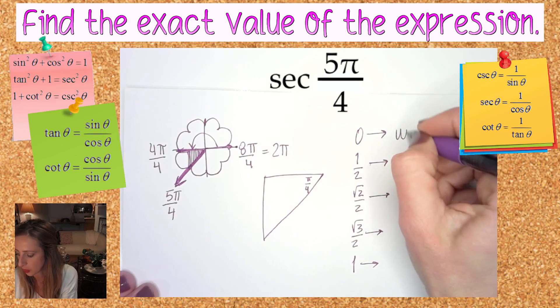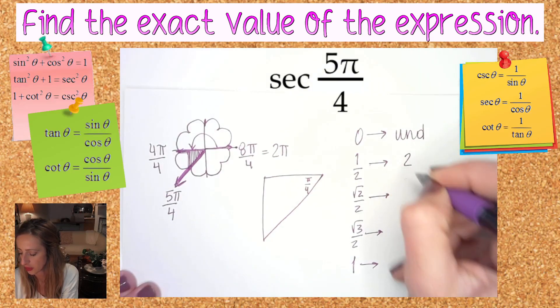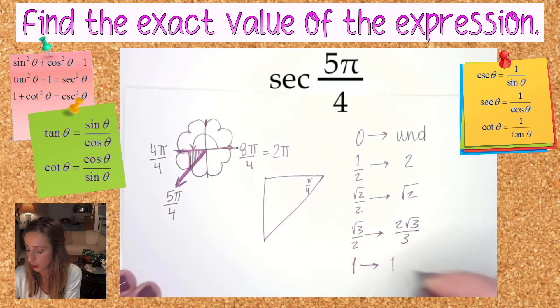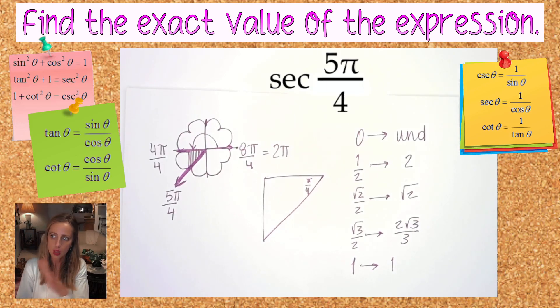Reciprocal of zero is undefined, of one half is two, root two over two is root two, root three over two is two root three over three, and the reciprocal of one is one. Positives and negatives don't change when you find a reciprocal.